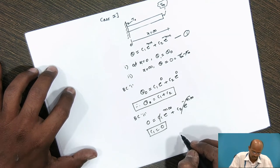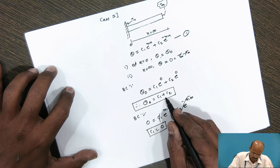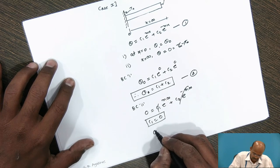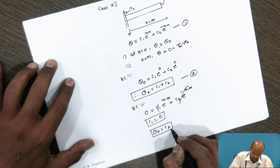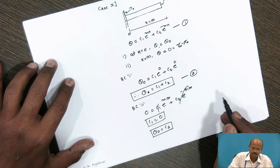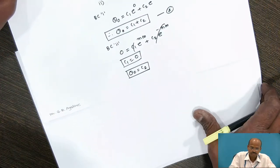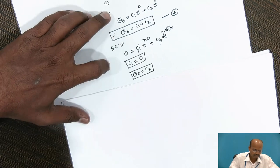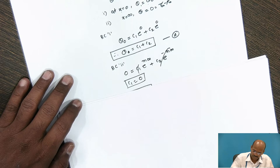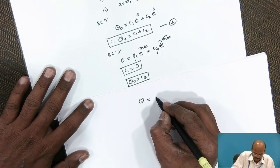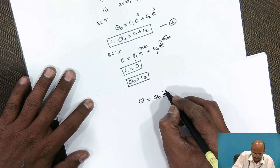C₁ is a constant. Substituting C₁ = 0 into the second equation, we get θ₀ = C₂. Now, substituting these constants back into the first equation.